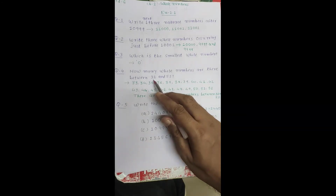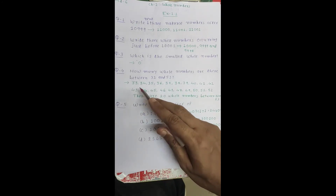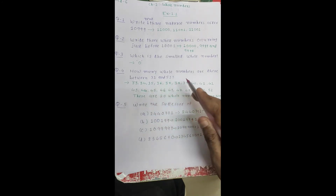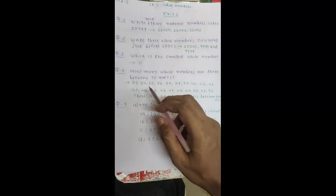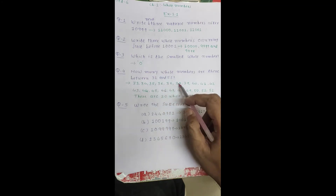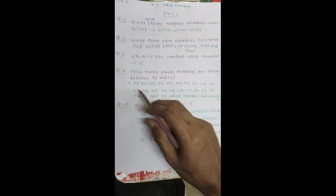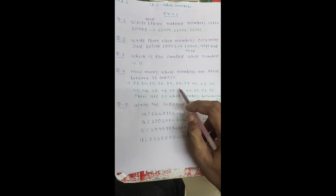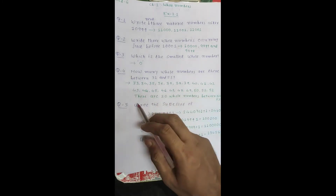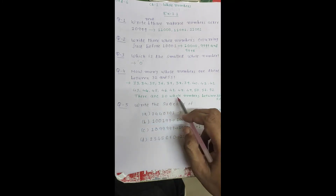We remember 32 and 53, so we list the numbers between them: 33, 34 up to 52. Counting them: 1, 2, 3, 4, 5, 6, 7, 8, 9, 10, 11, 12, 13, 14, 15, 16, 17, 18, 19, and 20. So the answer is: there are 20 whole numbers between 32 and 53.